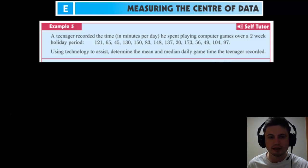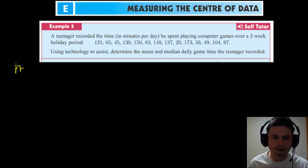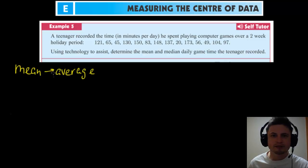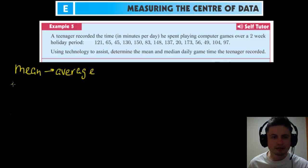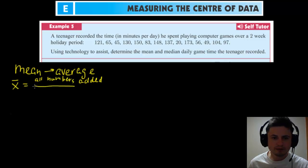Also, do record how many minutes per day you spend playing video games and report to me as well — I'm kind of curious because I'm sure I spend a lot more than you. So let's start with how do we find the mean, and what is the mean? I'm going to use yellow to denote mean, and mean is another word for average. You've probably encountered this before.